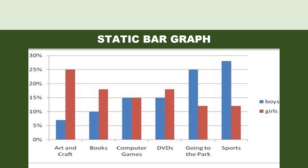Now look at this static bar graph. Do you see any time reference here? No. There is no time reference at all. You have keywords boys and girls, and activities like art and craft, books, computer games, DVDs, going to the park, and sports. These are the activities done by boys and girls. You have percentages from 0% to 30%, but in the graph you don't see any time reference or time period. So it is a static bar graph.